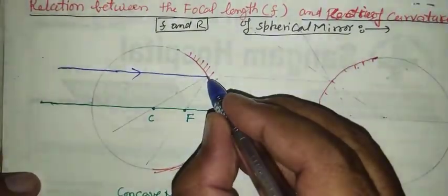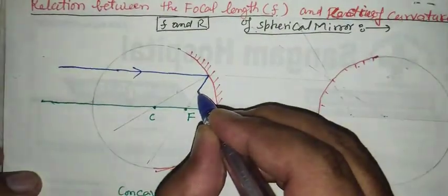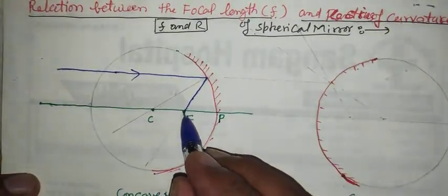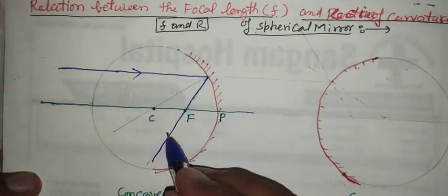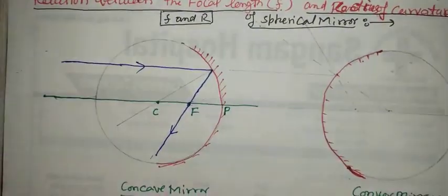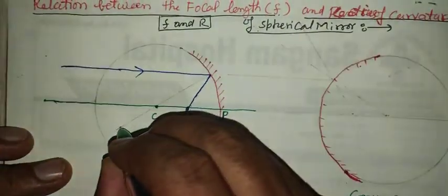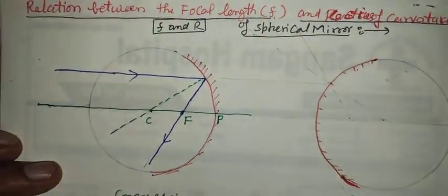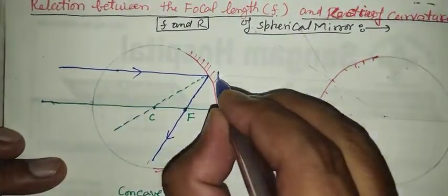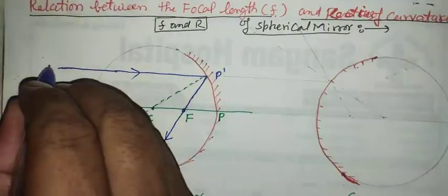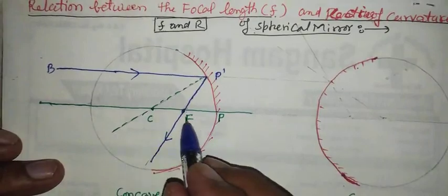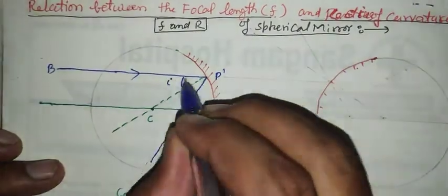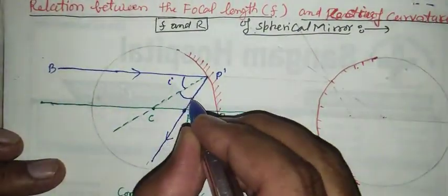We know from the law of reflection that after reflection from the surface of the concave mirror, it always passes through the focal point. Let us draw a tangent and normal here. In this case, let this point be P dash, and we have points P, C, and F marked, with angle of incidence i and angle of reflection r.